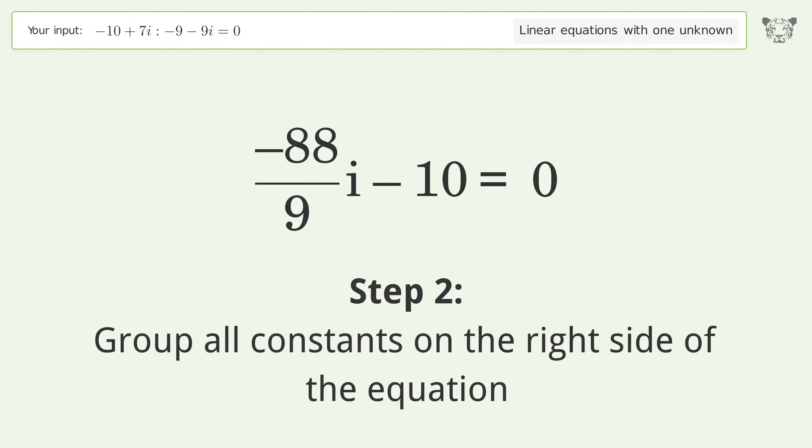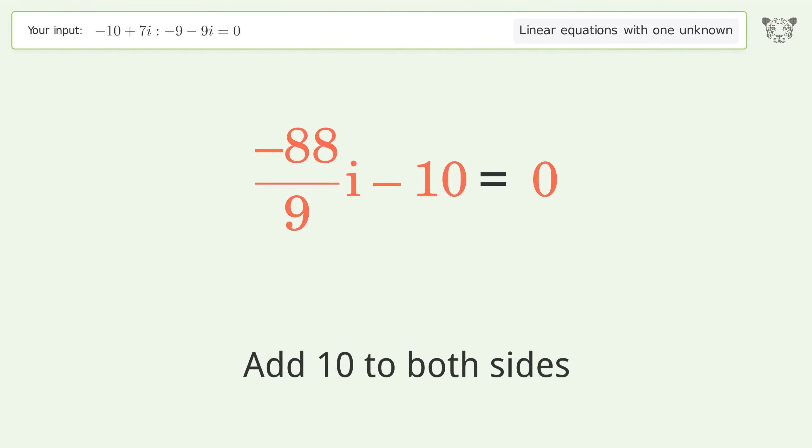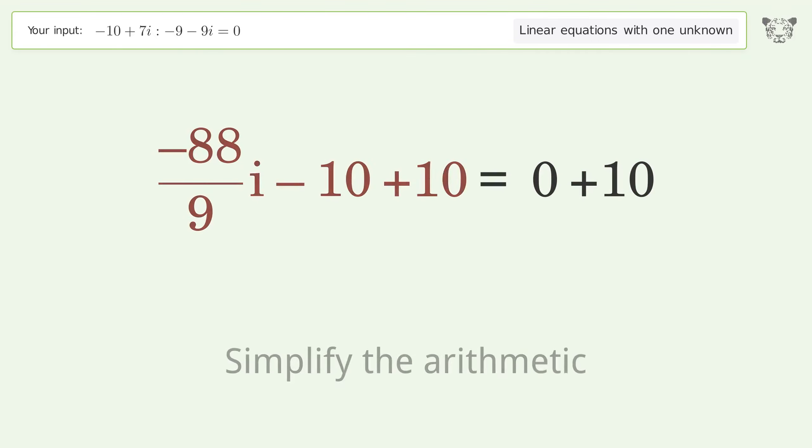Group all constants on the right side of the equation. Add 10 to both sides. Simplify the arithmetic.